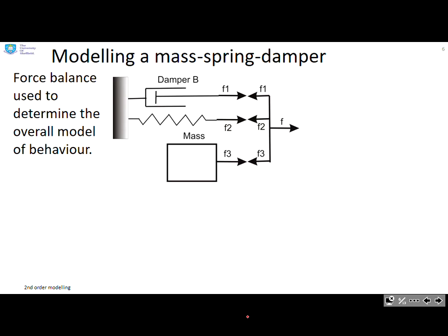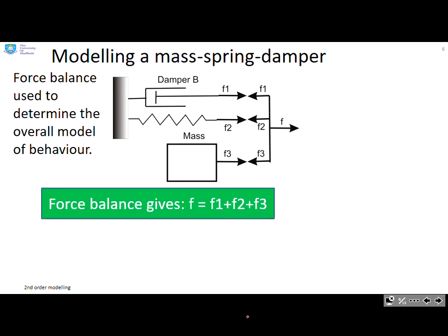So we start with a mass-spring damper, which basically matches a simple suspension system. So what are we going to do? We're going to do a balance equation. And you can see the balance equation comes from this bit here, where the applied force is essentially distributed across the three components: the damper, the spring, and the mass.